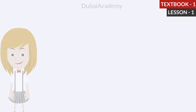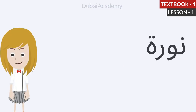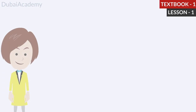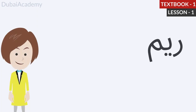The girl with the white dress is Noora. Let's repeat: Noora. The girl with the yellow dress is Reem. Let's repeat: Reem.